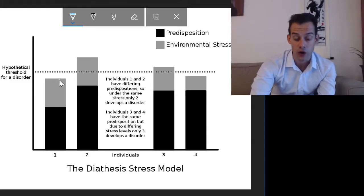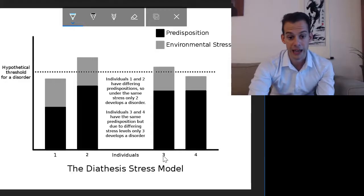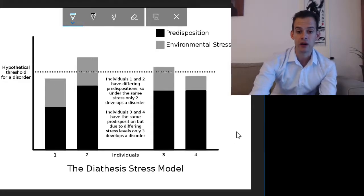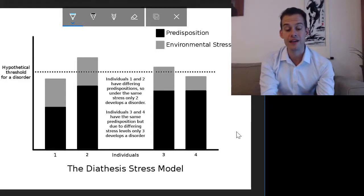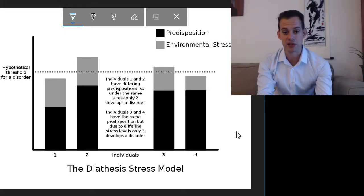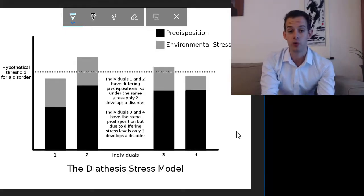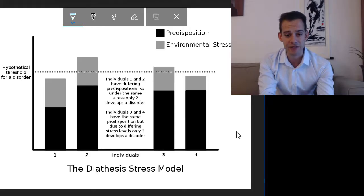Individual one will not cross this hypothetical threshold and therefore does not develop the disorder. Now if we look at individuals three and four on this chart we see that these two individuals have the same predisposition. Maybe these are monozygotic twins who share their genes and so they have the same predisposition for a particular illness but they face different amounts of environmental stress.